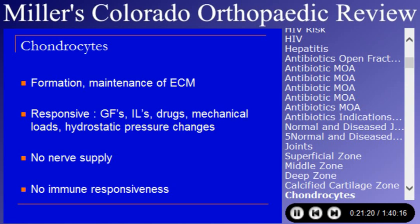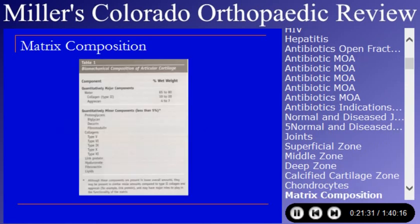There is no nerve supply to cartilage, and immunoglobulins are too large to pass into it, so there is relatively little immune responsiveness. The composition is mostly water — 65 to 80 percent, varying with age. Collagen is Type 2; bone collagen is Type 1 — they tend to ask that. The major proteoglycan called aggrecan forms 4 to 7 percent of the composition.